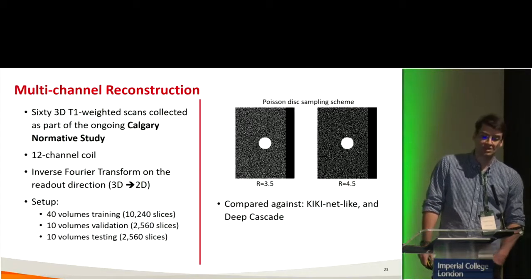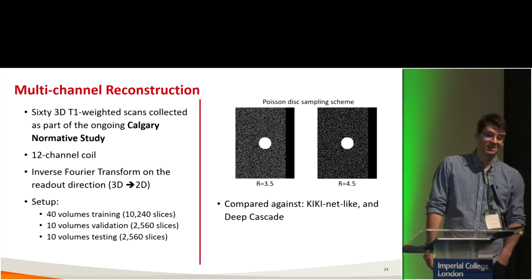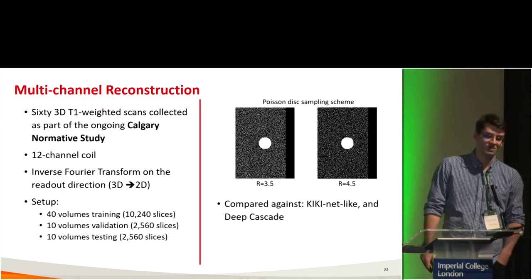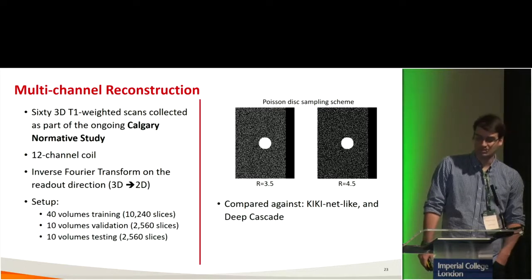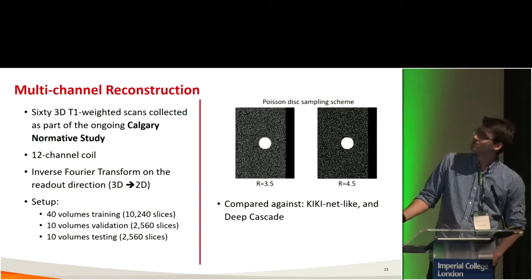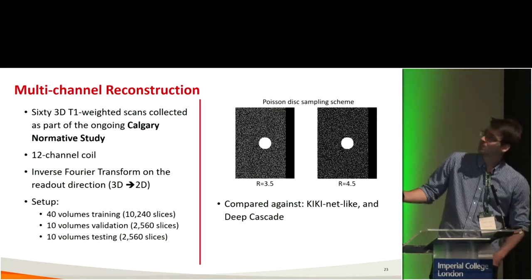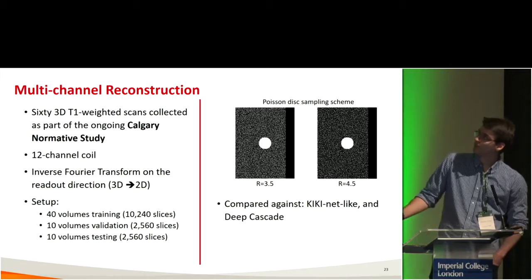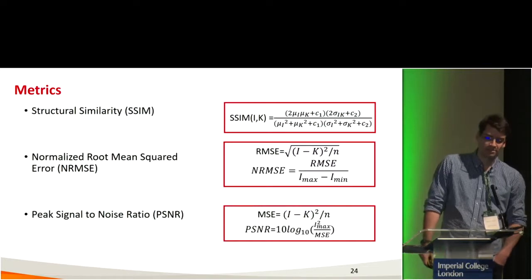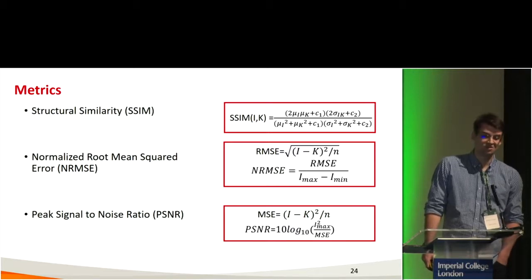For the multi-channel reconstruction experiment, I used 60 3D T1-weighted scans with a 12-channel coil, applying the inverse Fourier transform on the readout direction to reduce it to a 2D problem. I used 40 volumes for training, 10 for validation, and 10 for testing, with speed-up factors of 3.5 and 4.5, using a Poisson disk sampling scheme. I only compared against KikiNet-like and DeepCascade. Metrics used were structural similarity, normalized root mean square error, and peak signal-to-noise ratio.